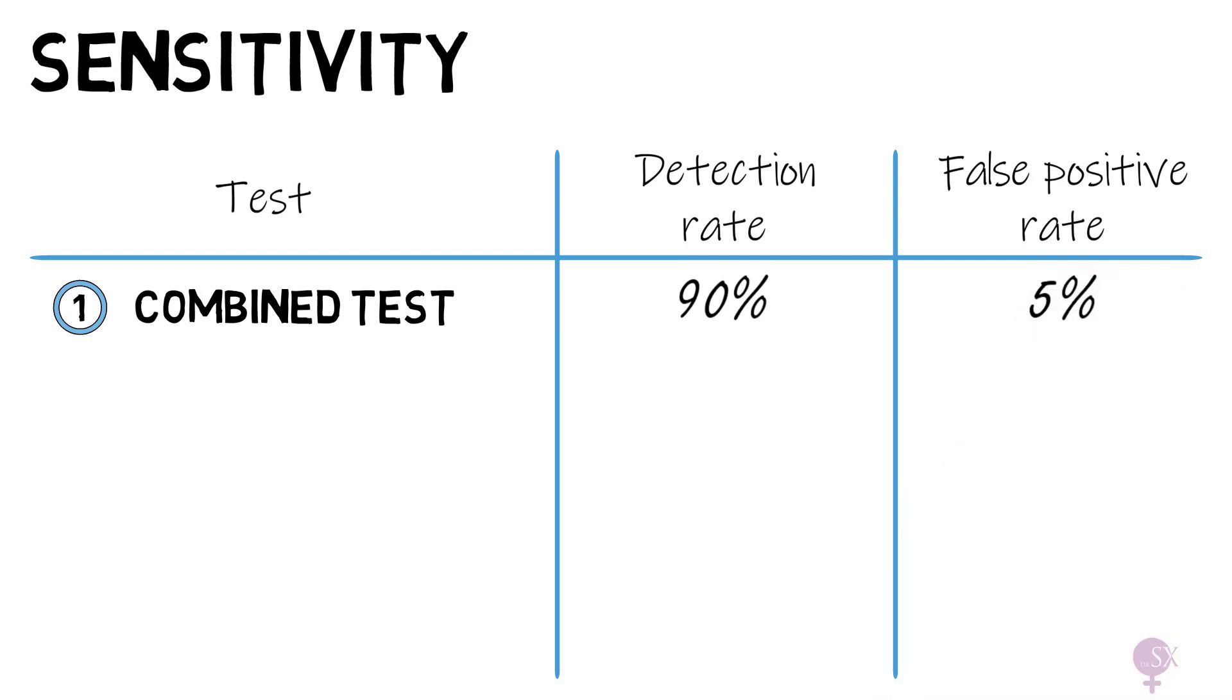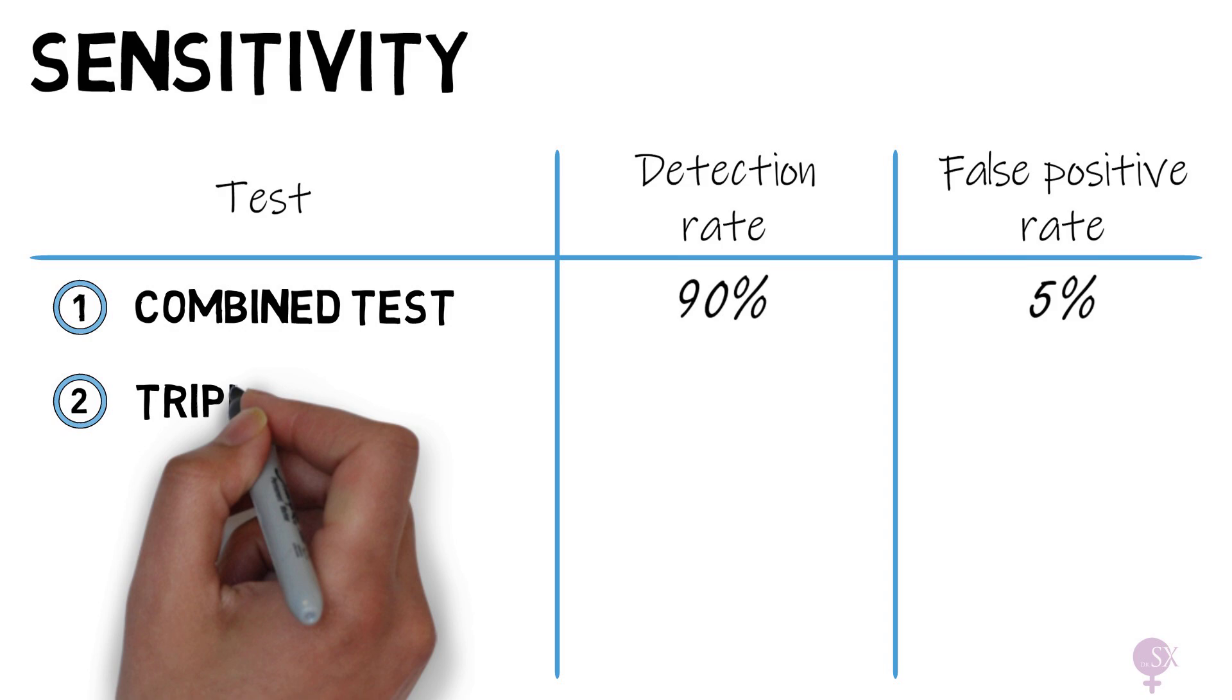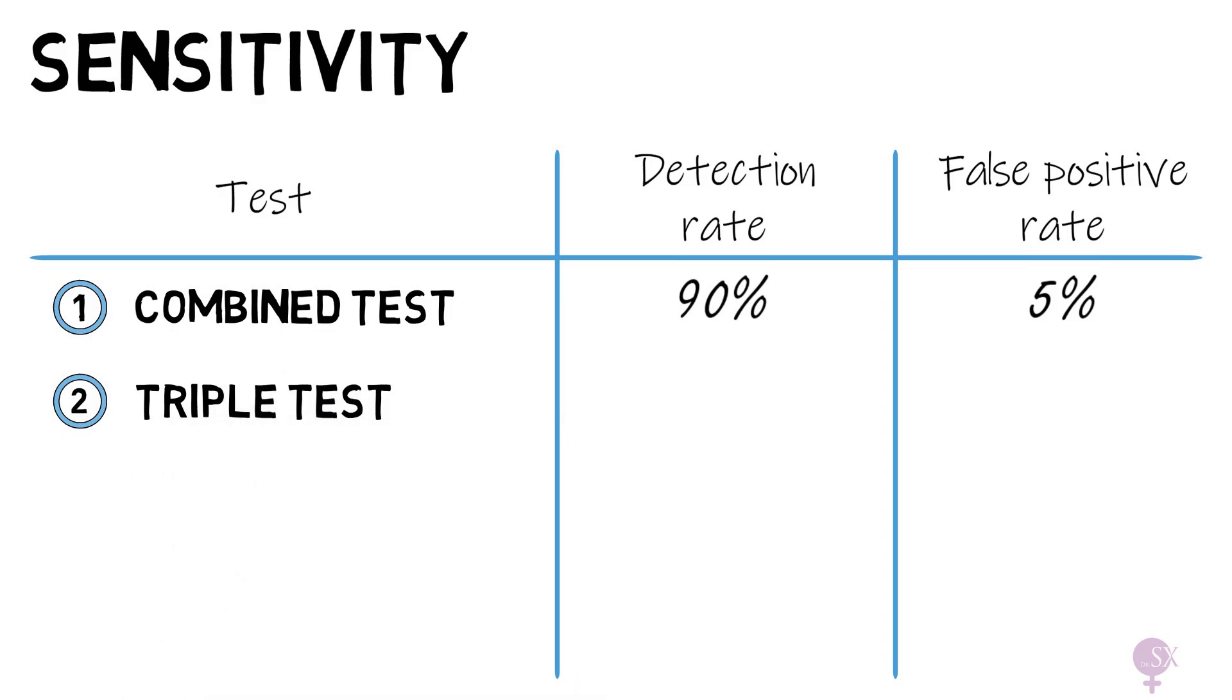Now the second trimester screening tests: the triple test has a detection rate of 65 to 70% and a false positive rate of 5%, while the quadruple test has a detection rate of 70 to 75% and a false positive rate of 5%.